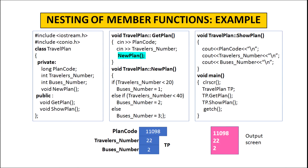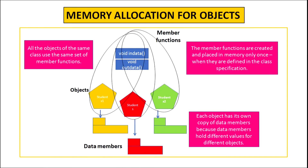It is very important to note that all objects have their own copy of data members but share the same copy of member functions. This is possible because each object holds different values for its data members. For example, three objects S, S1 and S2 of class student each have different copies of data members. Member functions are created and placed in memory only once when defined in the class specification, and all objects share the same copy because at a time only one object can invoke a particular member function.